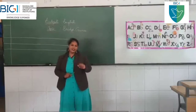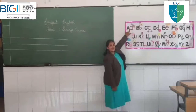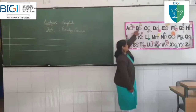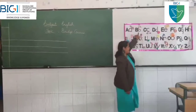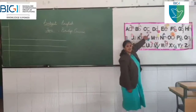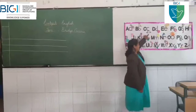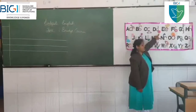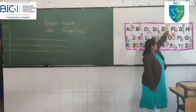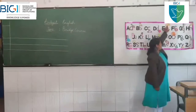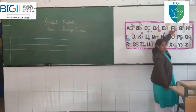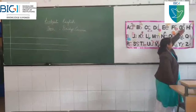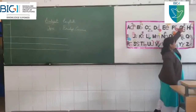Now shall we start with the alphabet song? A is for apple. B is for baby. C is for car. D is for dice. E is for animal. F is for car. G is for car. H is for hand.